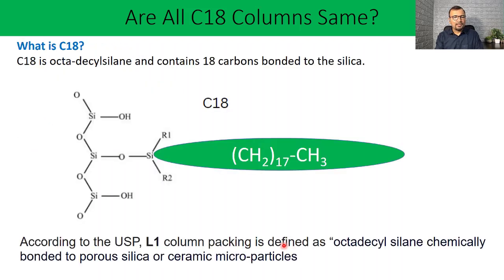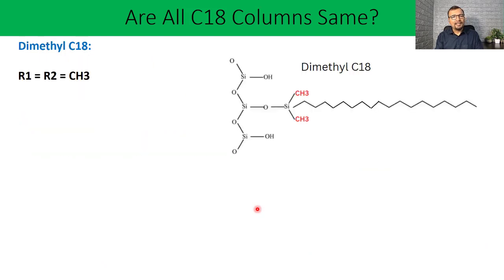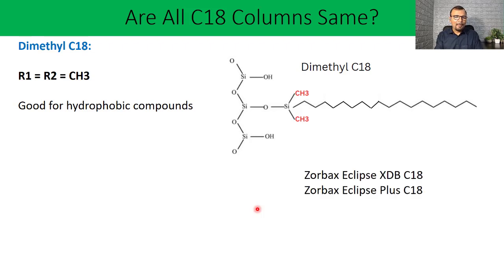As you can see in the diagram, there are two alkyl groups connected to the silica, R1 and R2. If R1 and R2 equals methyl, then this is called dimethyl C18. You may not have seen dimethyl C18 as a brand name or on the certificate of analysis of the column, but if R1 and R2 equals methyl, you can call this dimethyl C18. This kind of column is very good for hydrophobic interactions and can be used for analysis of hydrophobic compounds. These are commercial examples like Zorbax Eclipse XDB C18 or Zorbax Eclipse Plus C18.